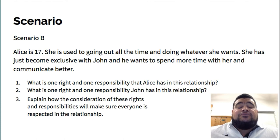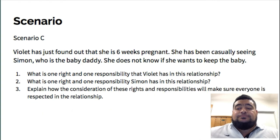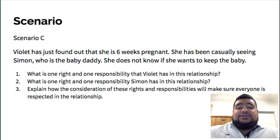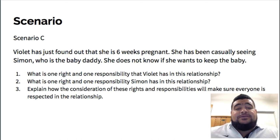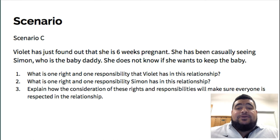And number three, explain how the consideration of these rights and responsibilities will make sure that everyone is respected in this relationship. Our final scenario: scenario C. Violet has just found out that she is six weeks pregnant. She's been casually seeing Simon, who is the baby's father. She does not know if she wants to keep the baby.